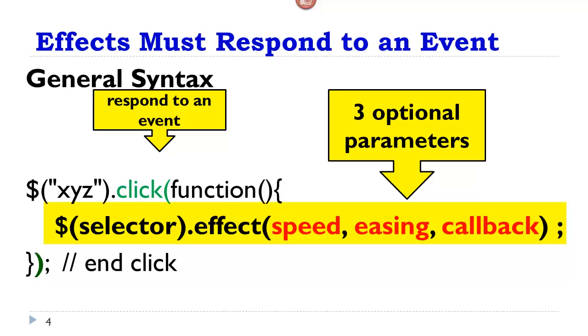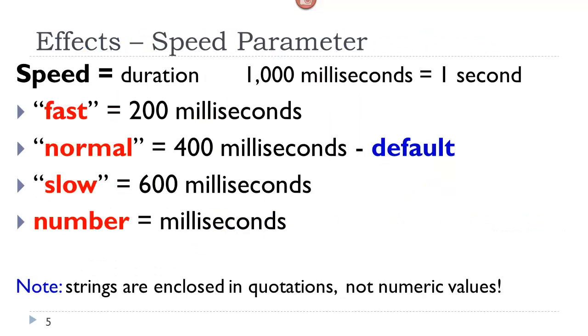Inside the parentheses, we see three optional parameters. The first one being the speed, the second one being easing, the third one being an optional callback function. So the speed is the duration that the effect lasts. And speed is measured in milliseconds. There are 1,000 milliseconds in a second.